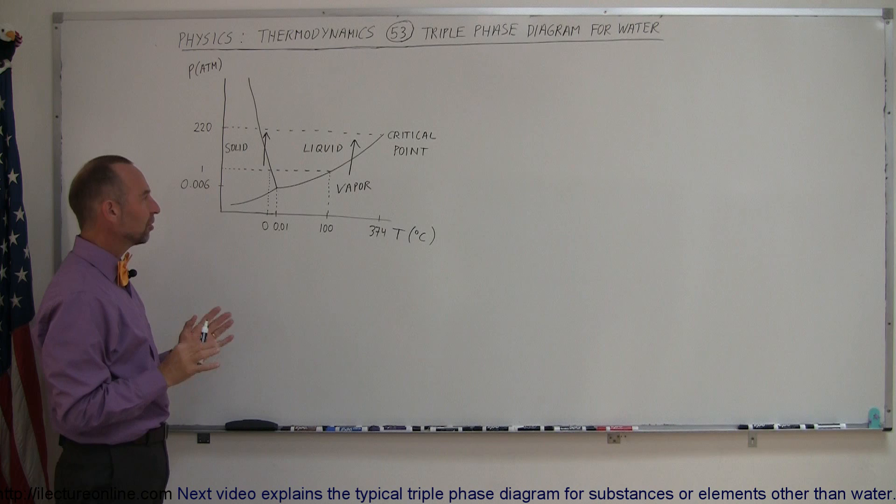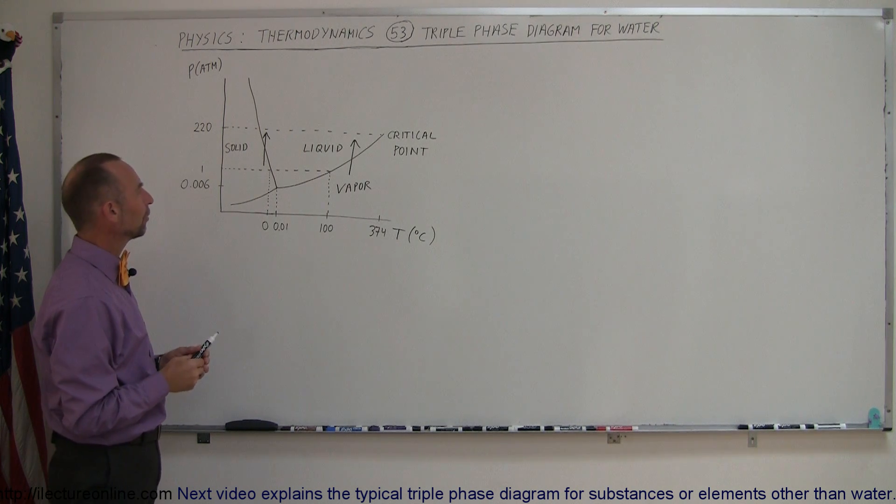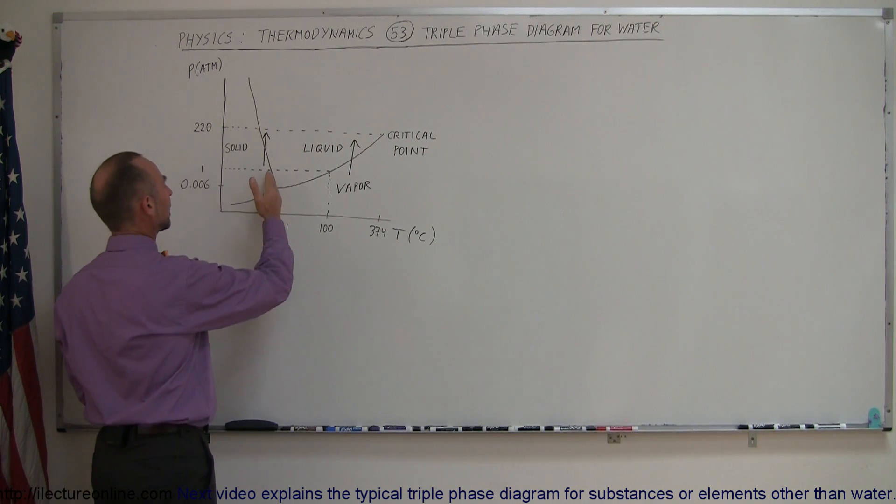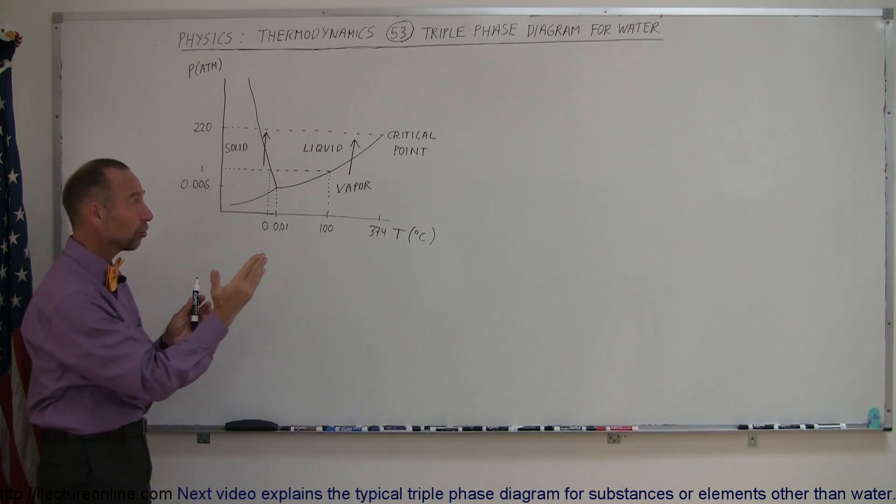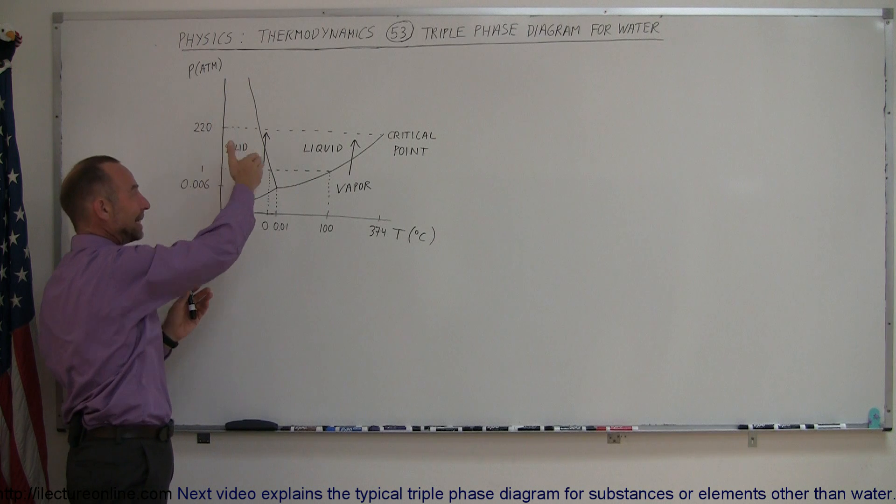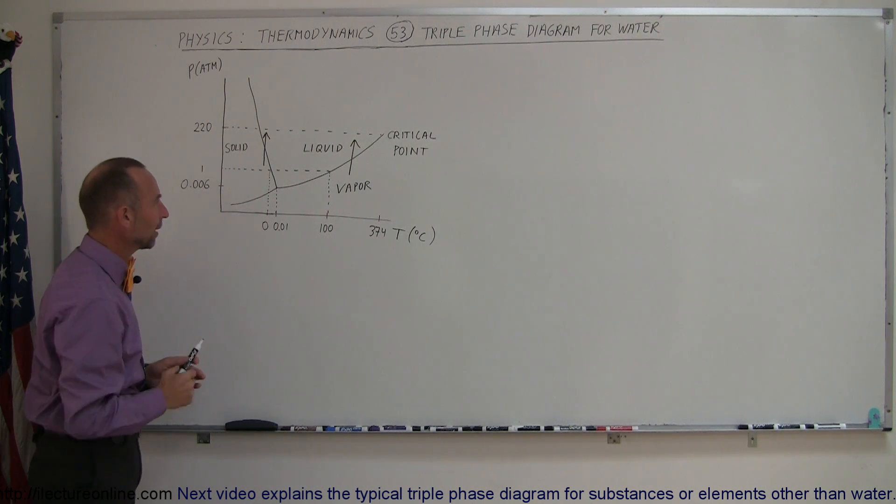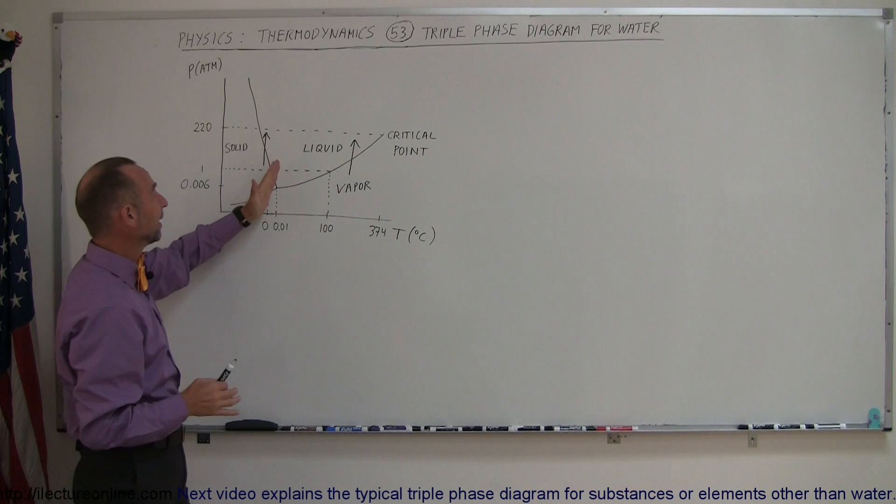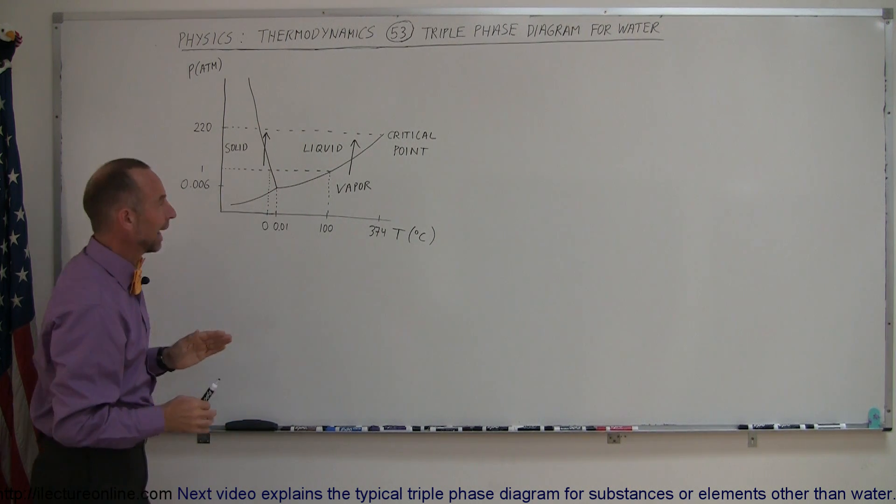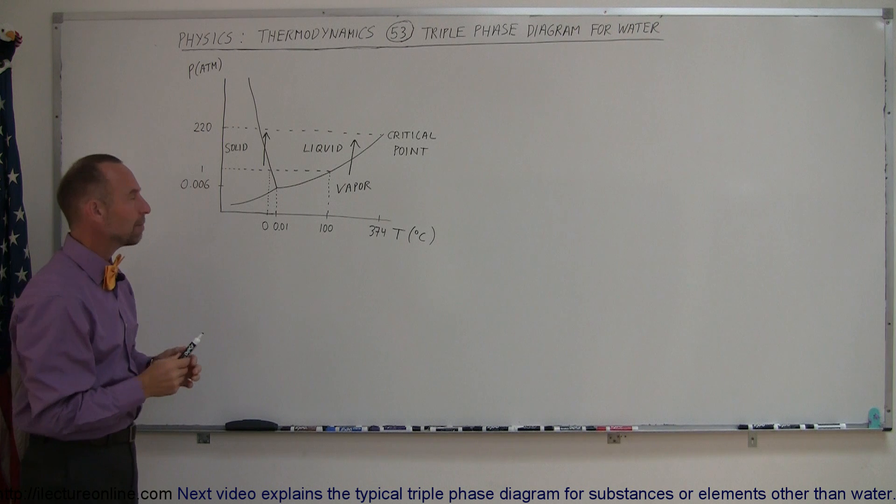So how is this diagram helpful? Well, for one thing, it has this line right here, which is the dividing line between solid and liquid. And notice that it's sloped to the left, or it has a negative slope if you go from left to right. Normally, for all substances, this line tends to be to the right. It has a positive slope. So what does that mean?